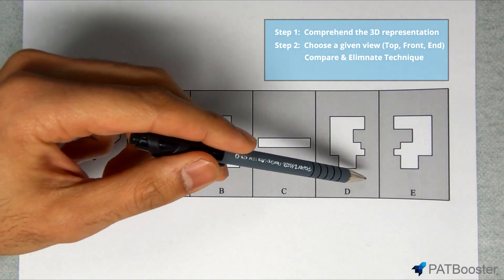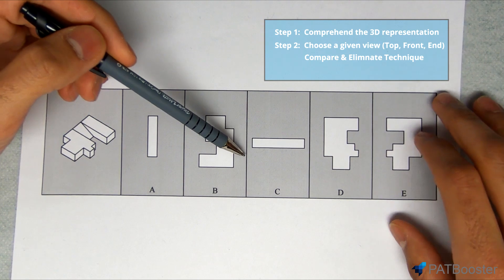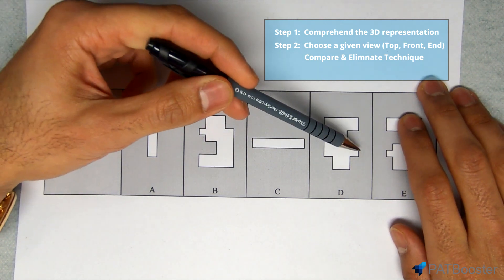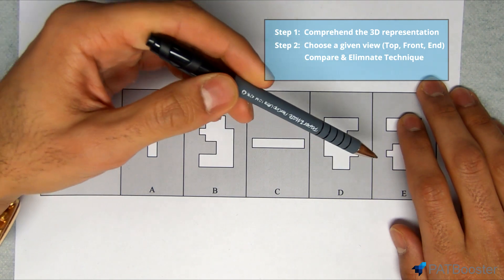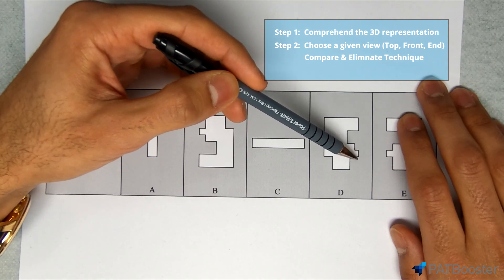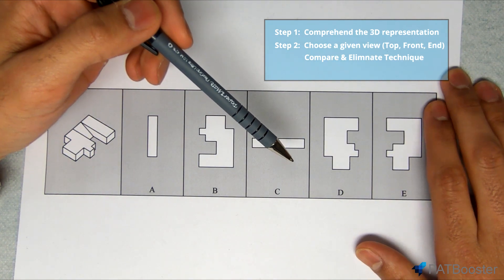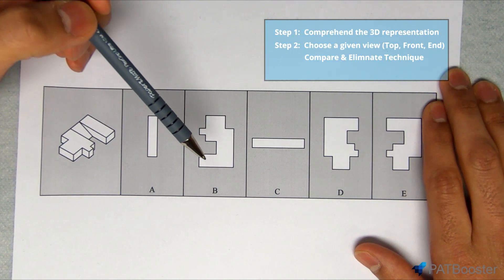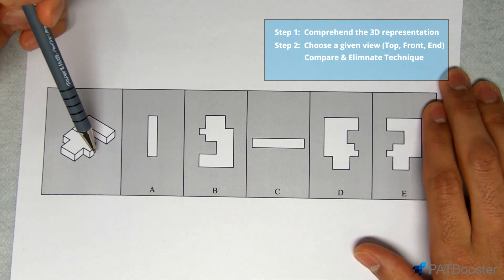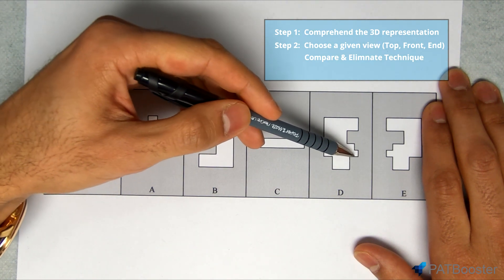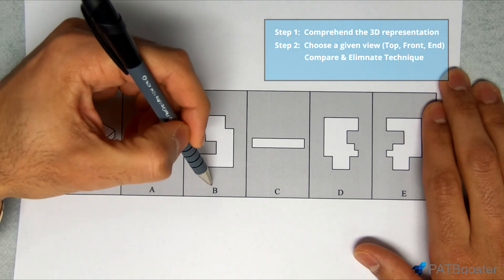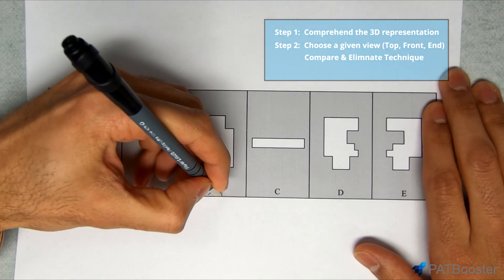So looking at B and D, first thing I notice is that this little extension right here has sides of the same length on B, whereas on D the lengths are different. And now that I've found a difference between the two I can simply reference the 3D representation and see which one I can eliminate. So looking at this, I can see that this extension in question has sides with different lengths as seen in D. So I'm looking at these two lines right here. So that more so matches this, which means that B cannot be correct and we can cross it right off. Just like that.